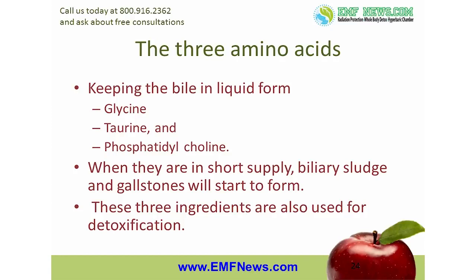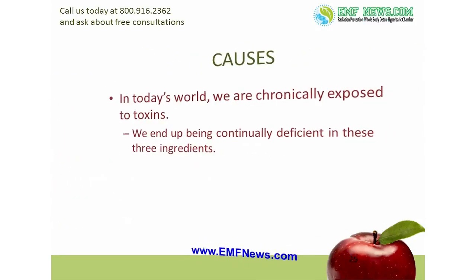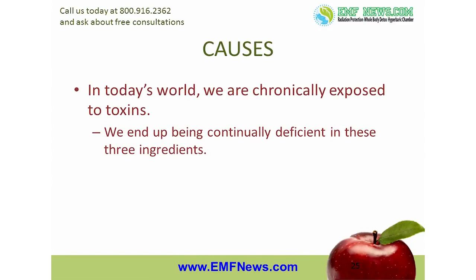Glycine and taurine are involved in a detoxification process called peptide conjugation, and phosphatidylcholine is used in a detoxification process called methylation. Now if we were only exposed to toxins once in a while, it wouldn't be a problem. But in today's world, we are chronically exposed to toxins. As a result, we end up being continually deficient in these three ingredients.